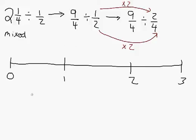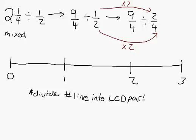The first thing that you need to do is divide the number line into lowest common denominator parts. Here the lowest common denominator is four. And so you divide it into fourths. So we go ahead and do that, one, two, three, four, one, two, three, four, one, two, three, four.